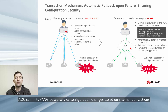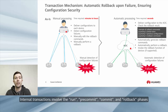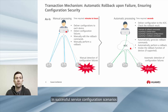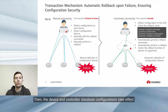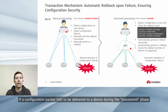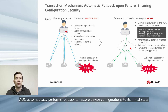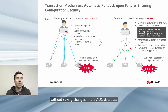During end-to-end configuration, AOC commits YANG-based service configuration changes based on internal transactions. Internal transactions involve the run, pre-commit, commit, and rollback phases. In successful service configuration scenarios, each configuration on each device goes through the run, pre-commit, and commit phases in sequence. Then the device and controller database configurations take effect. If a configuration packet fails to be delivered to a device during the pre-commit phase, AOC automatically performs rollback to restore device configurations to their initial state without saving changes in the AOC database.